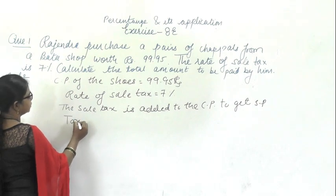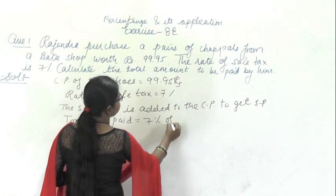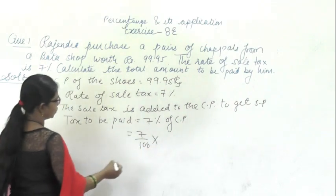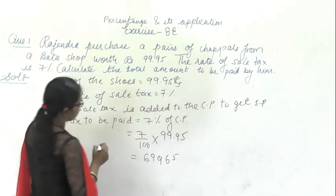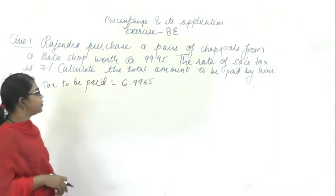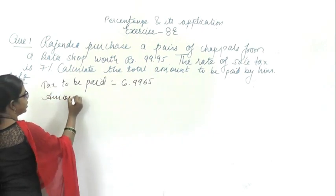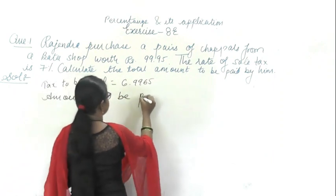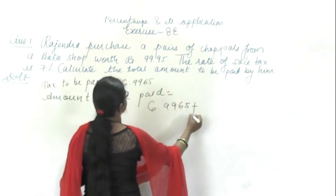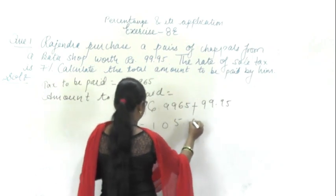Tax to be paid is 7% of cost price. That is 7/100 into 99.95. On solving this you get 6.9965. This is the total tax to be paid. Now, amount to be paid is this tax to be paid plus the cost price, that is 99.95.